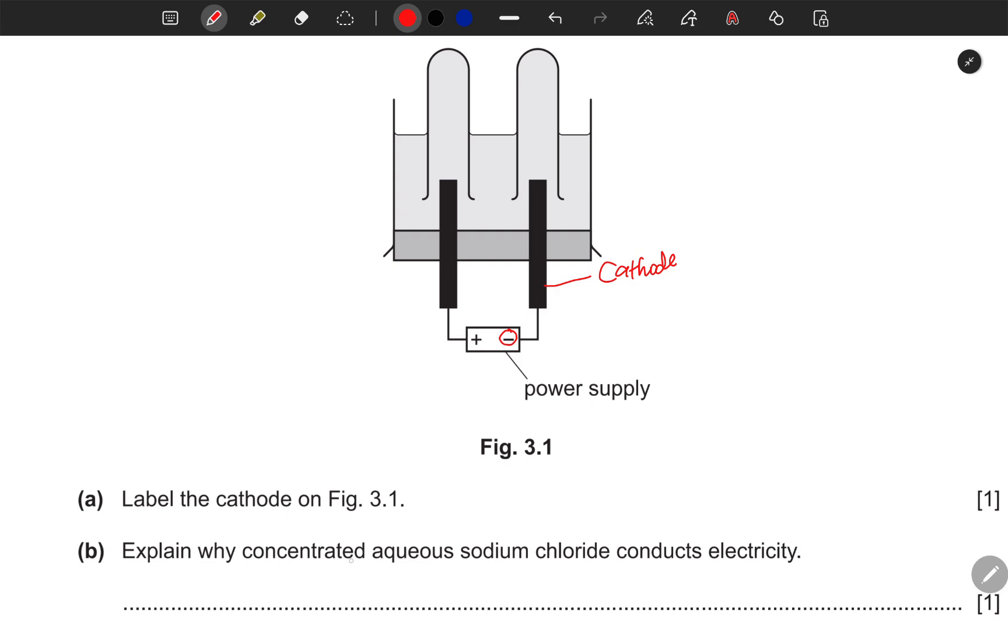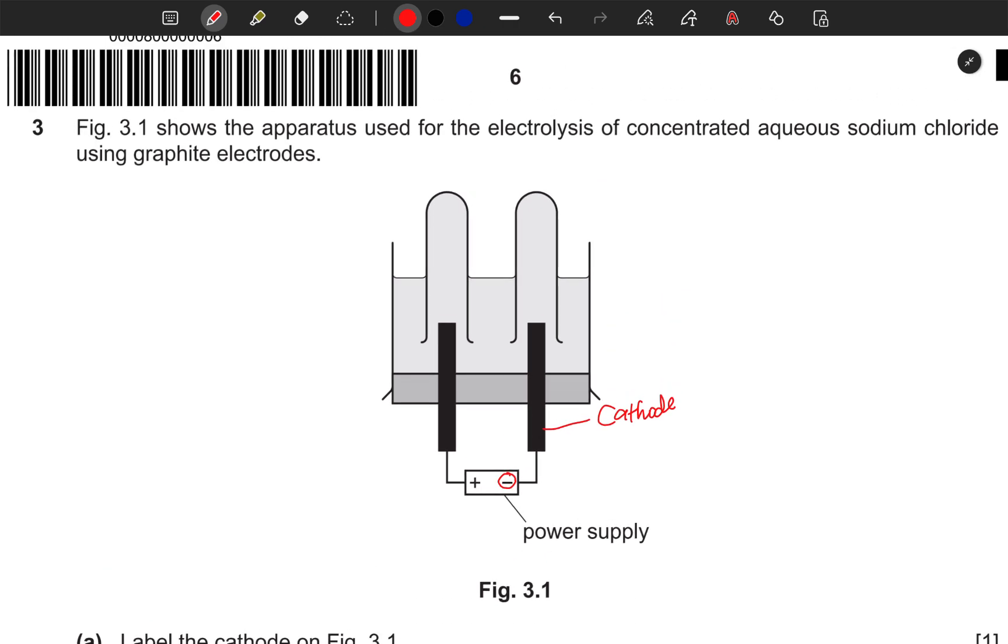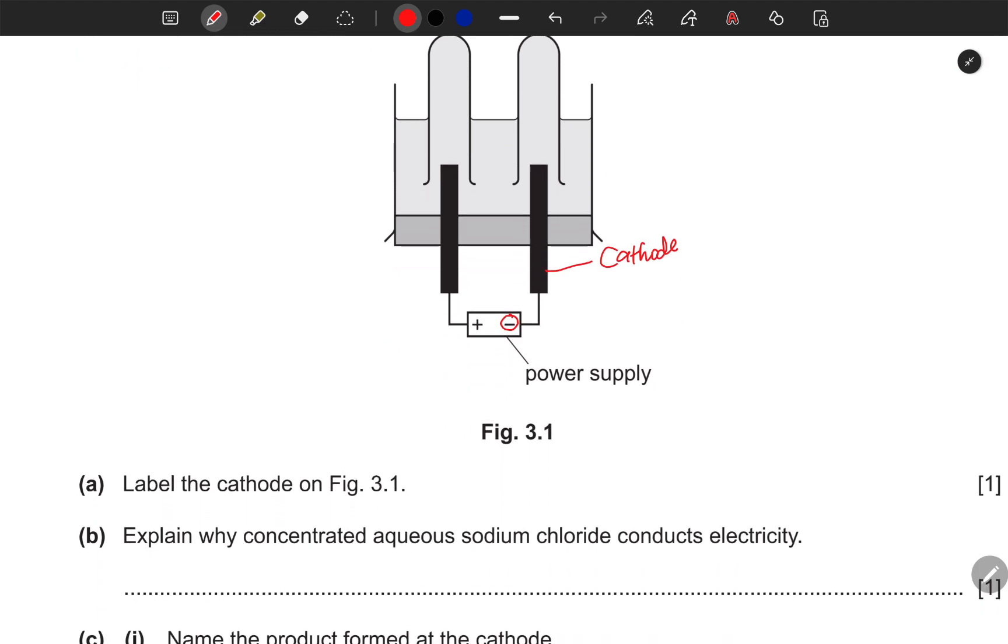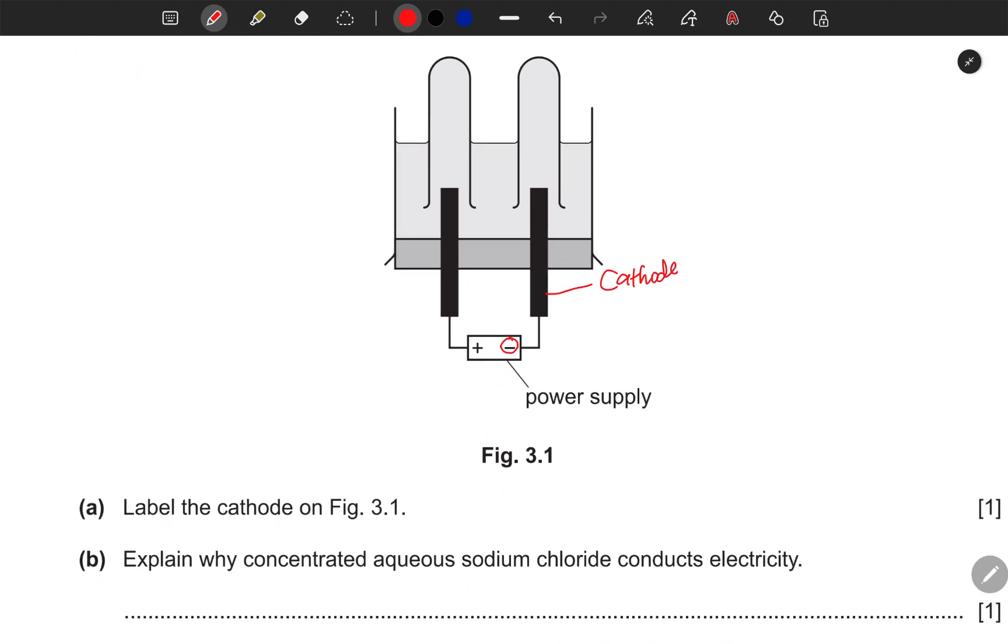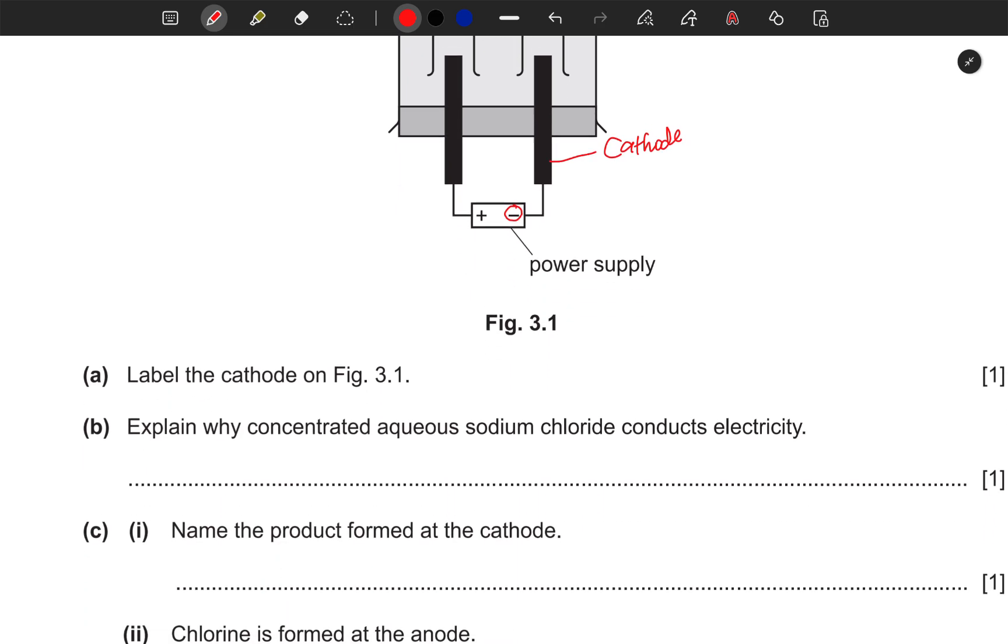Explain why concentrated aqueous sodium chloride conducts electricity. So why does concentrated aqueous sodium chloride conduct electricity? Well, in an aqueous solution, ions are able to move. Since ions are able to move, they conduct electricity.